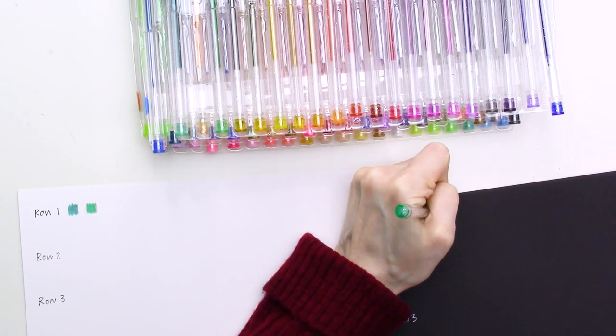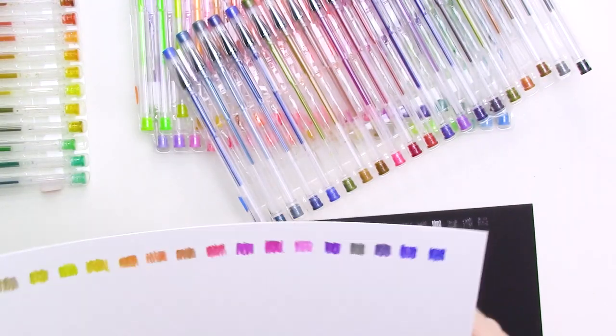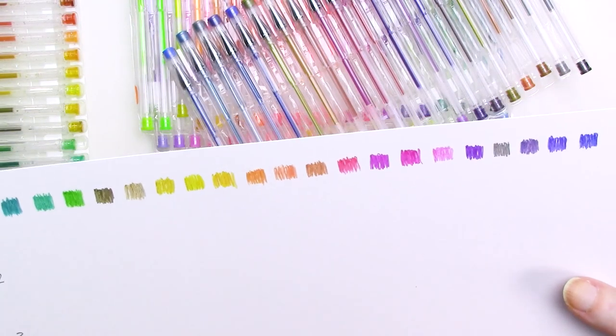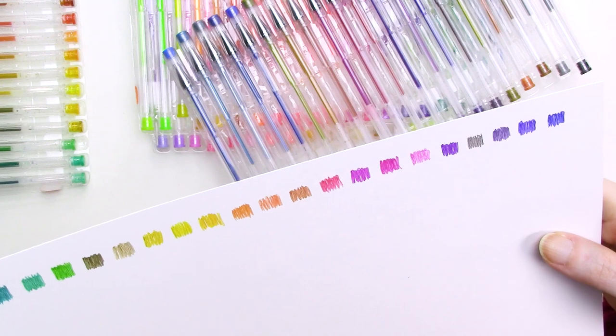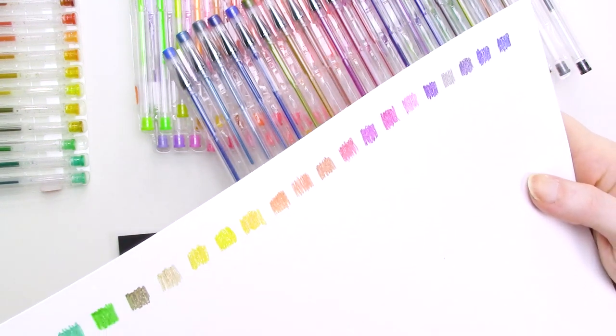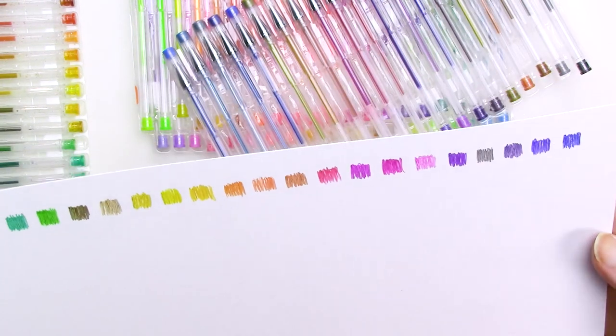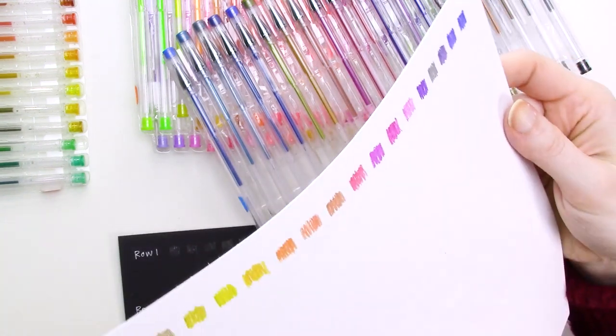The first tray has the glitter colors. I really like the range of glitter colors in this set, and I hope you can see that they have a pretty decent glittery payoff when I hold the white cardstock at an angle. They're not super glittery, but I was happy with the glitter level.